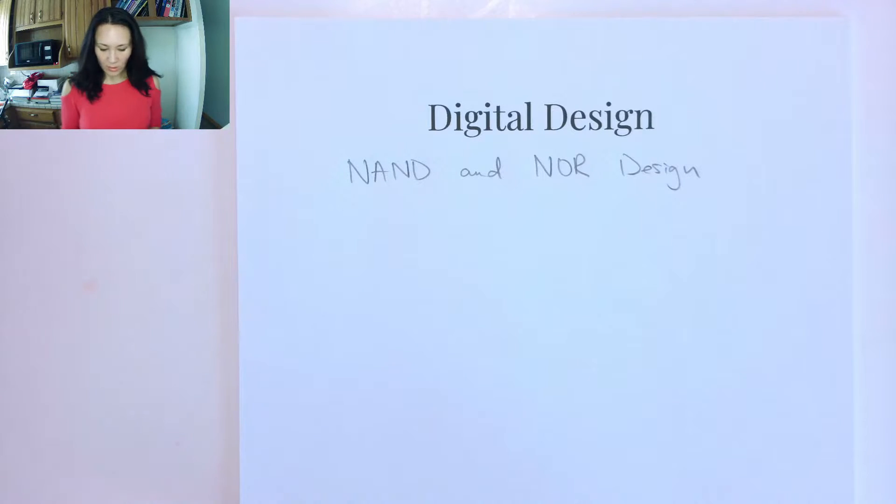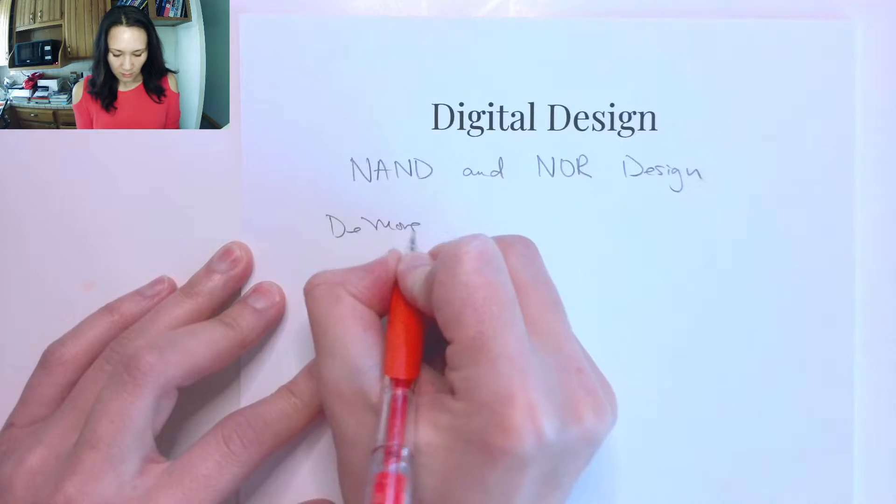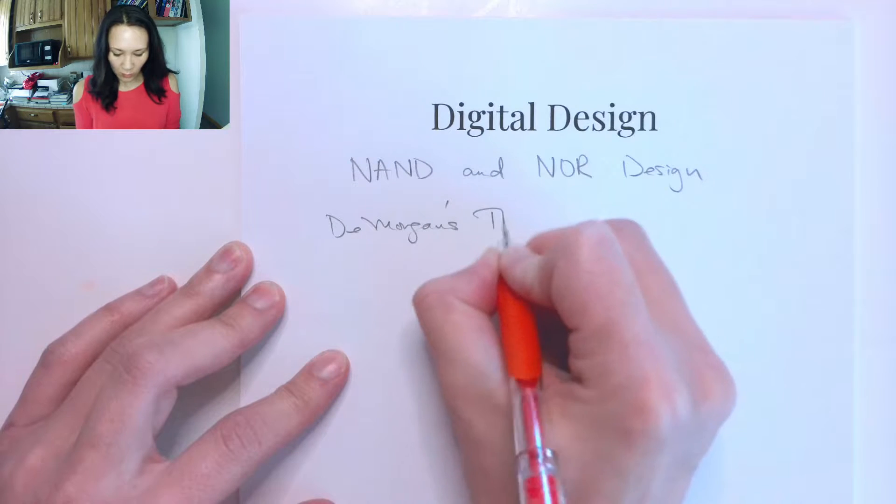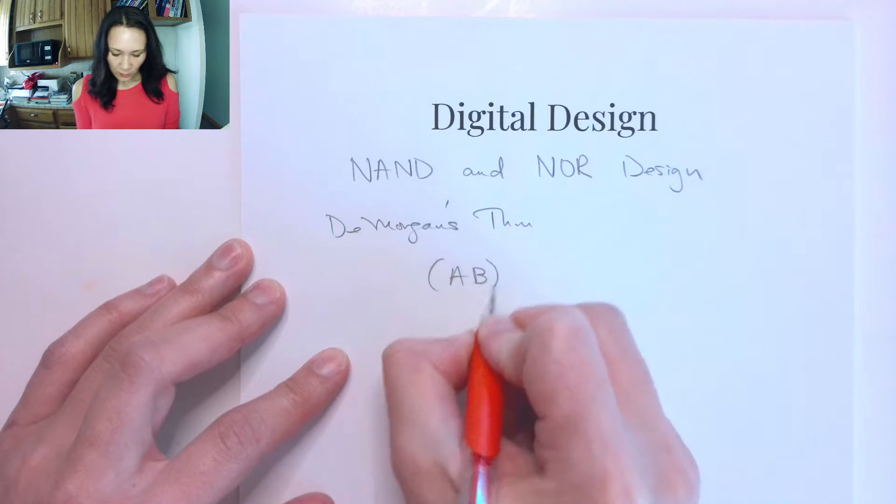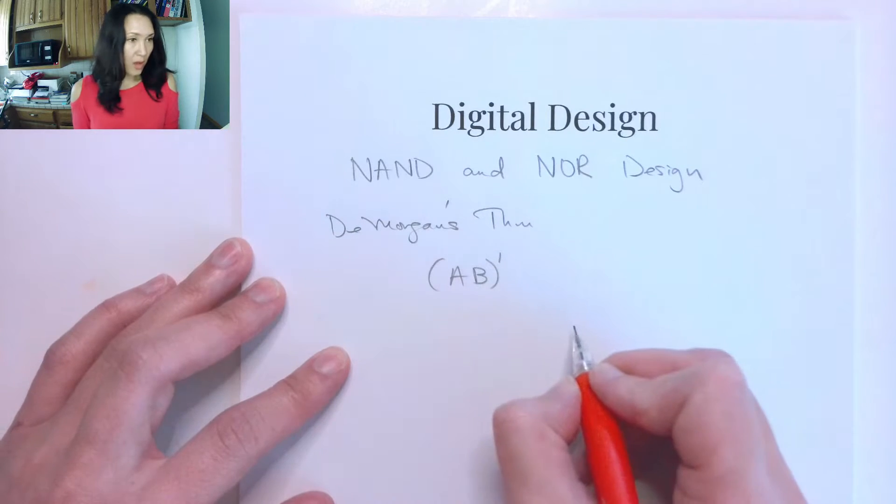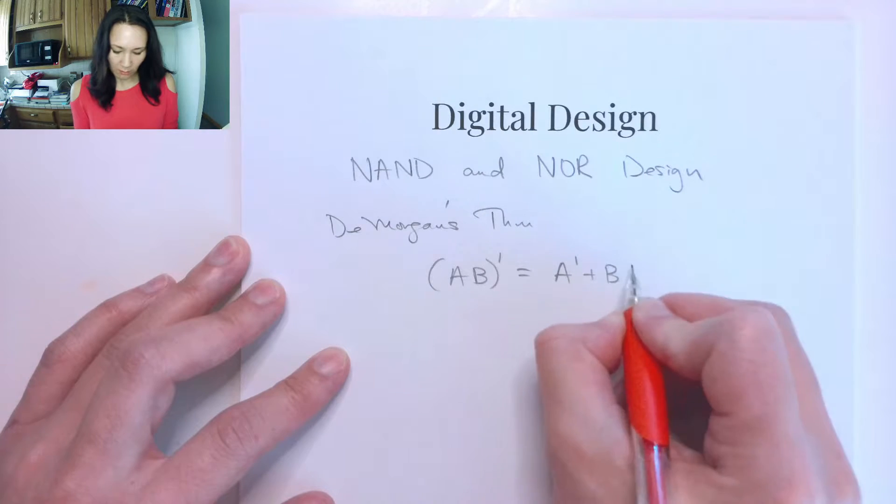It turns out there is a pretty useful graphical analog to De Morgan's theorem. There's kind of two cases for De Morgan's theorem. The first one is if we have two inputs ANDed together and we NOT those, that is equivalent to A NOT OR B NOT.